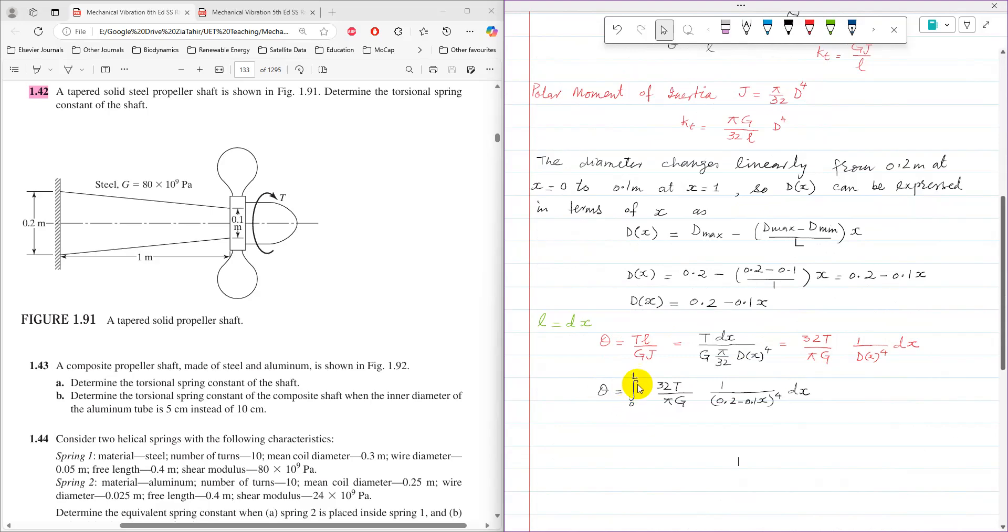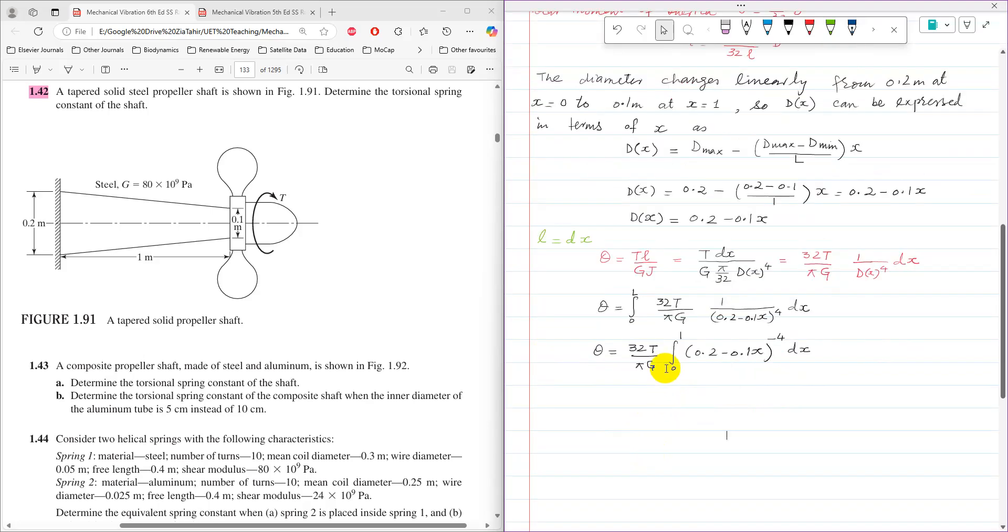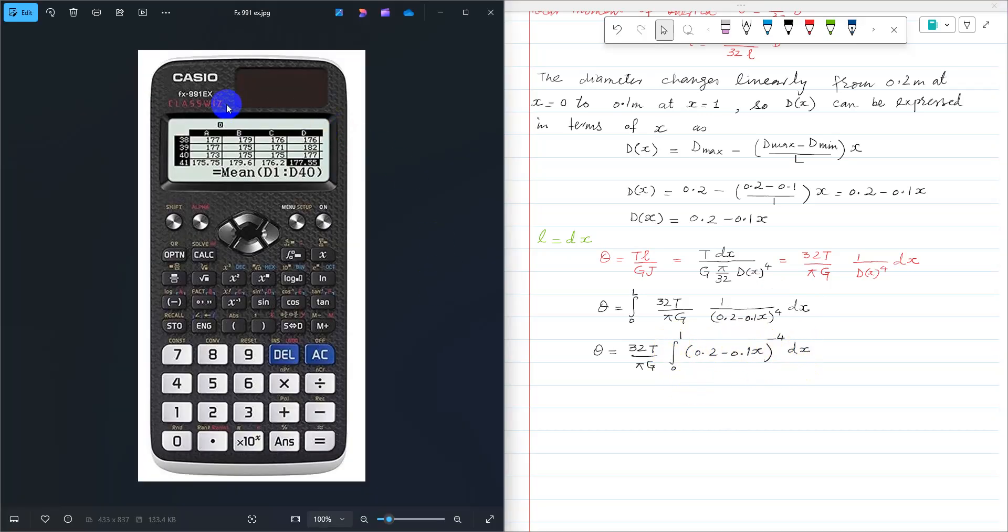Now this theta can be integrated from 0 to total length L, and then DX expression which we have already, 0.2 minus 0.1 into X raised power 4, can be substituted. So L equals 1, so then further it can be integrated over 0 to 1. Because in this integration expression, 32 T, pi, and G are constant, so they can be taken out, and from 0 to 1, and then by taking denominator into the numerator by changing the power to minus 4, so then this expression can be integrated.